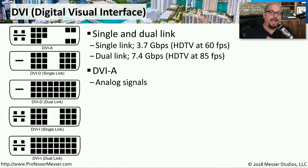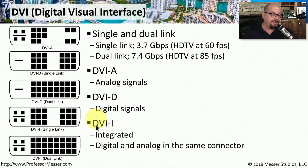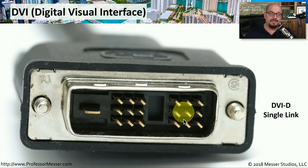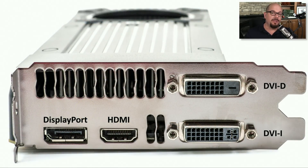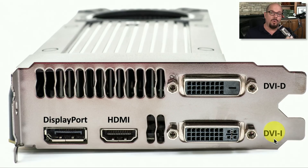DVI supports both analog and digital communication. DVI-A supports analog signals, DVI-D sends digital signals, and DVI-I is an integrated connector that sends both digital and analog signals through the same connector. Here's the end of a DVI cable — we can tell it supports the digital version of DVI by the grouping of pins on the cable. Looking back at that video adapter card with the DisplayPort and HDMI connectors, the two DVI interfaces look a little different: the top connector is DVI-D supporting digital video, and the bottom connector is DVI-I supporting either digital or analog video.